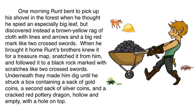One morning, Runt bent to pick up his shovel in the forest when he thought he spied an especially big leaf, but discovered instead a brown-yellow rag of cloth with lines and arrows and a big red mark like two crosswords. When he brought it home, Runt's brothers knew it for a treasure map, snatched it from him, and followed it to a black rock marked with scratches like two crosswords.